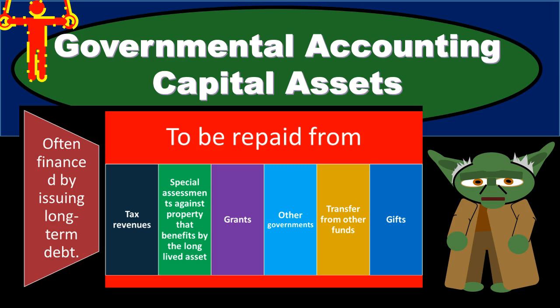In this presentation, we will take a look at capital assets as they relate to governmental accounting. Capital assets are those types of assets that we will capitalize — put on the books as an asset rather than an expense — typically long-term assets such as property, plant, and equipment, often things that are going to be depreciable assets.